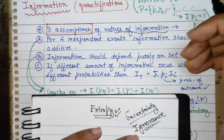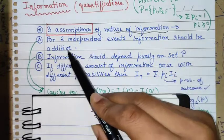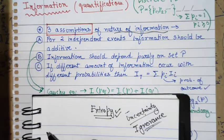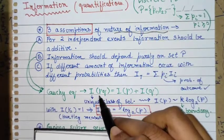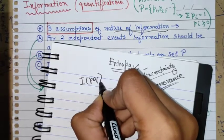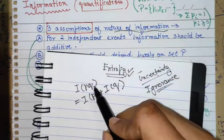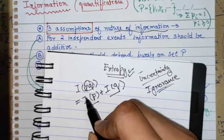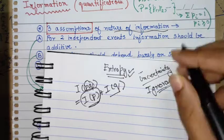We assume three things about the nature of information content. First, for two independent events, information should be additive. If you have two independent events playing out, the amount of uncertainty in the total event is the sum of the individual uncertainties. The information you gain about the total event is the sum of the information from the individual events.